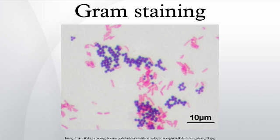Carbolfuchsin is sometimes substituted for safranin since it more intensely stains anaerobic bacteria, but it is less commonly used as a counter-stain. Crystal violet dissociates in aqueous solutions into CV+ and chloride ions. These ions penetrate through the cell wall and cell membrane of both Gram positive and Gram negative cells. The CV+ ion interacts with negatively charged components of bacterial cells and stains the cells purple. Iodide interacts with CV+ and forms large complexes of crystal violet and iodine within the inner and outer layers of the cell. Iodine is often referred to as a mordant, but is a trapping agent that prevents the removal of the CV-iodine complex and therefore colors the cell.